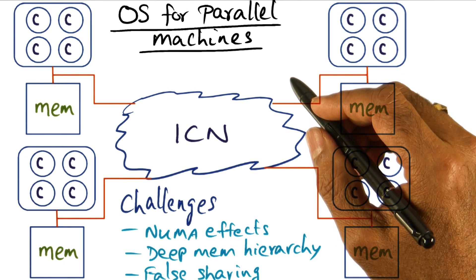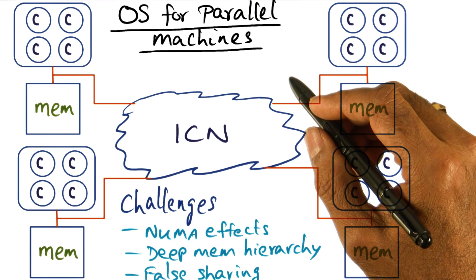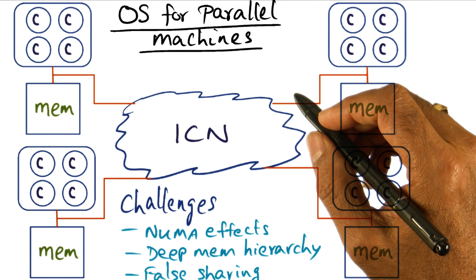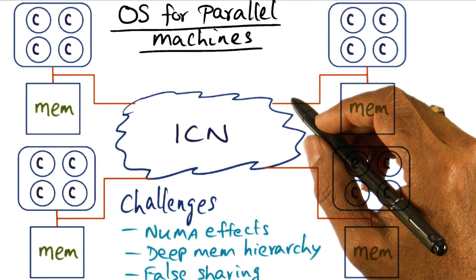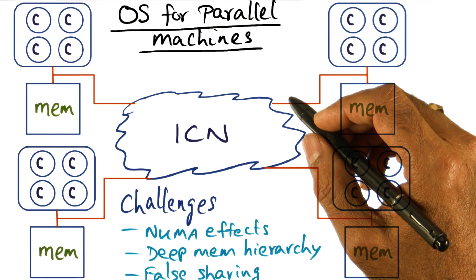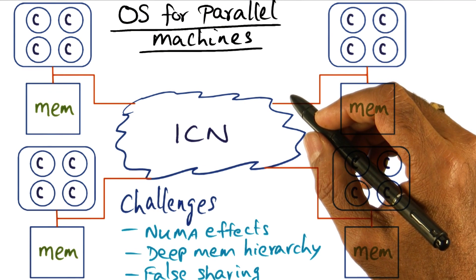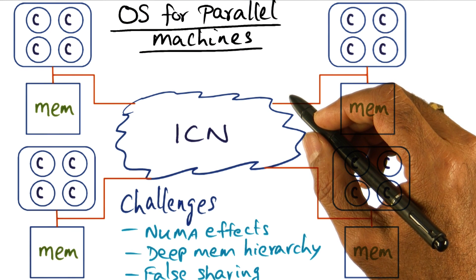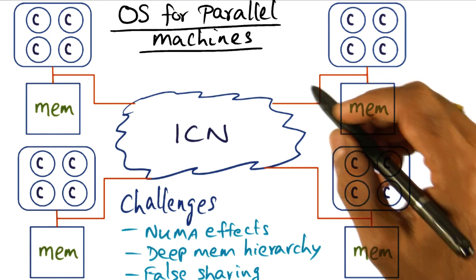Well, first of all, there's a size bloat of the operating system. The size bloat comes because of additional features that we have to add to the operating system. And that results in system software bottlenecks, especially for global data structures.